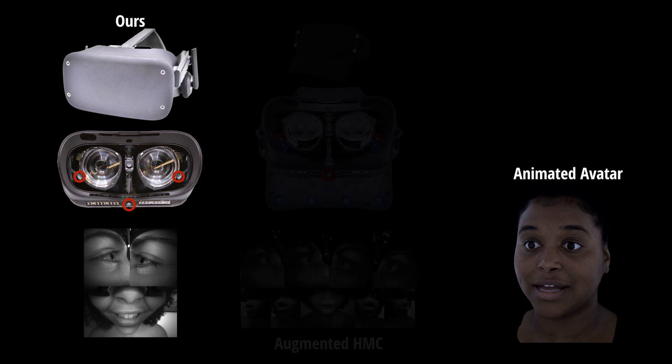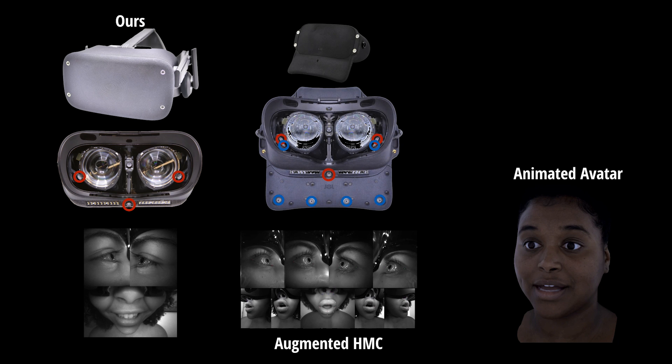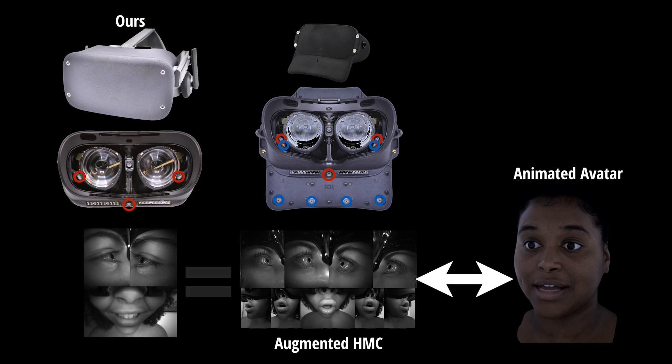To solve this problem, we built another headset with 6 additional cameras at more accommodating positions to help establish correspondence. Once we correspond the 9 view images with the avatar, we can simply drop additional views to get the training data we need.